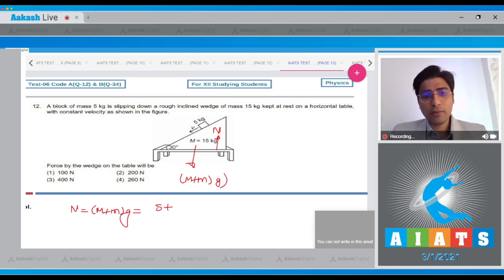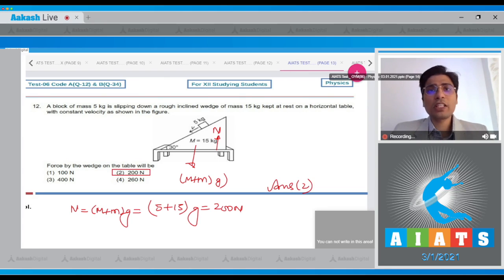So, this will be equal to 5 plus 15 into g, giving us a value of 200 N. And hence, for this question, the correct answer should be option number 2. Now, moving on to the question number 13.